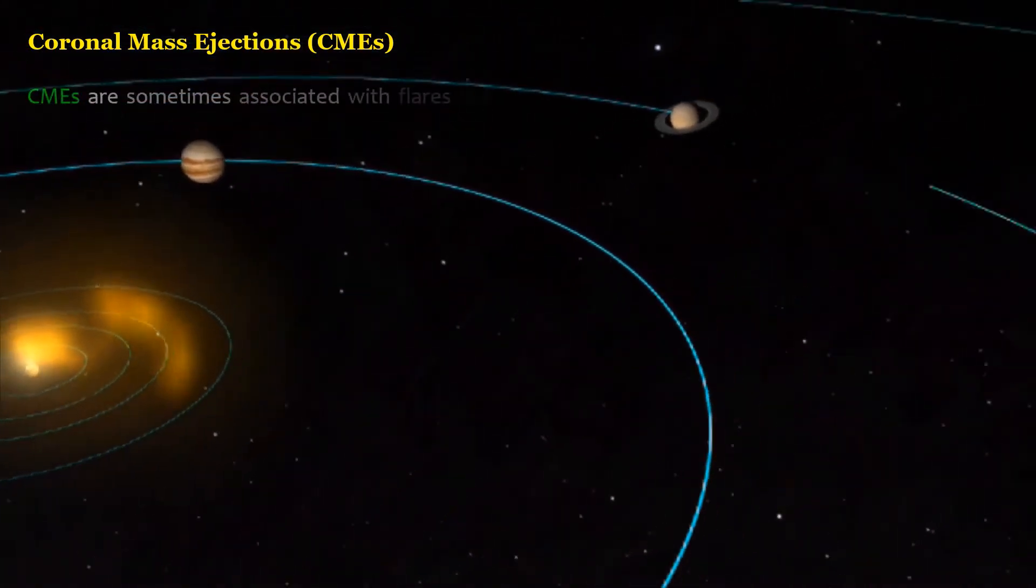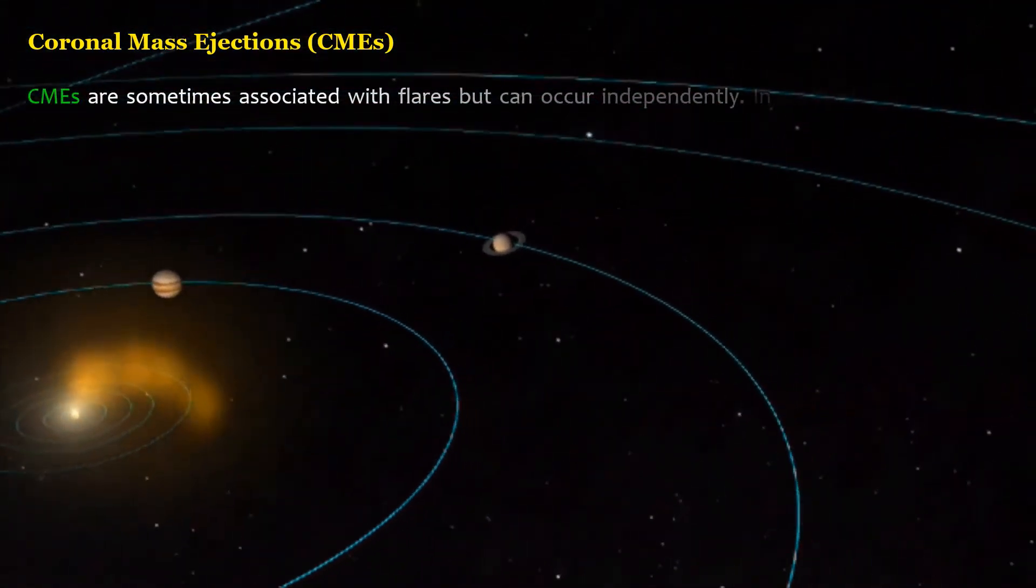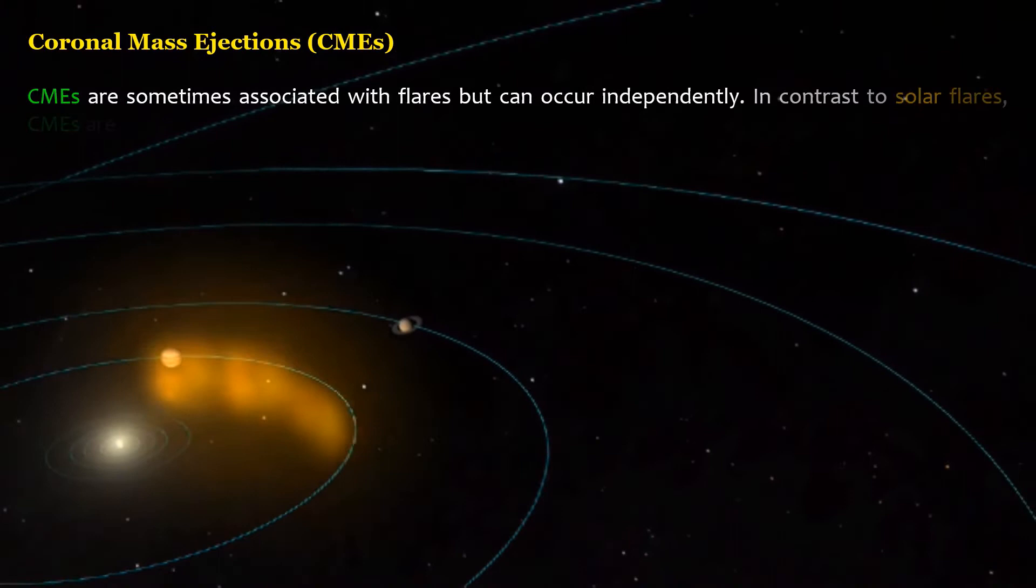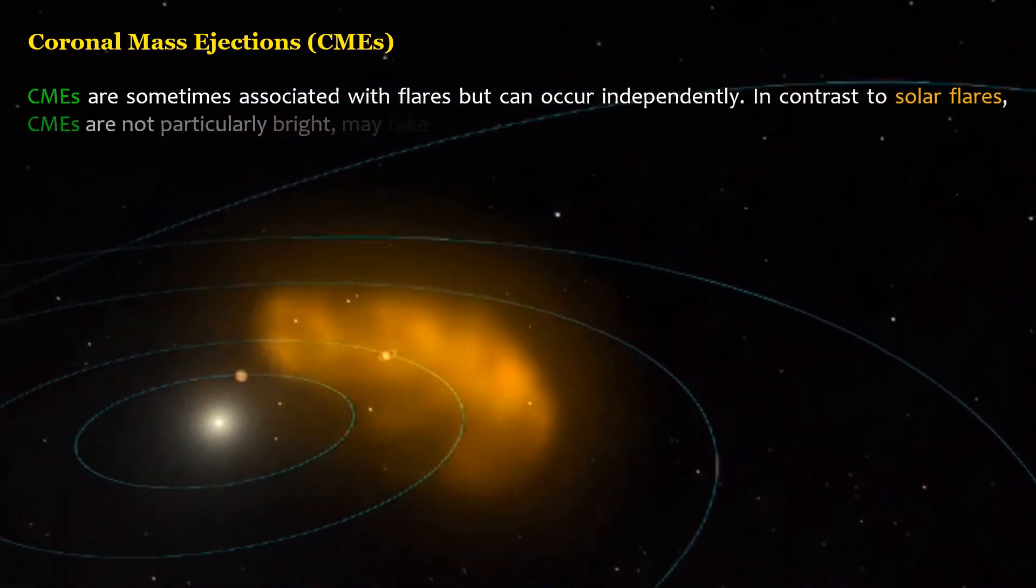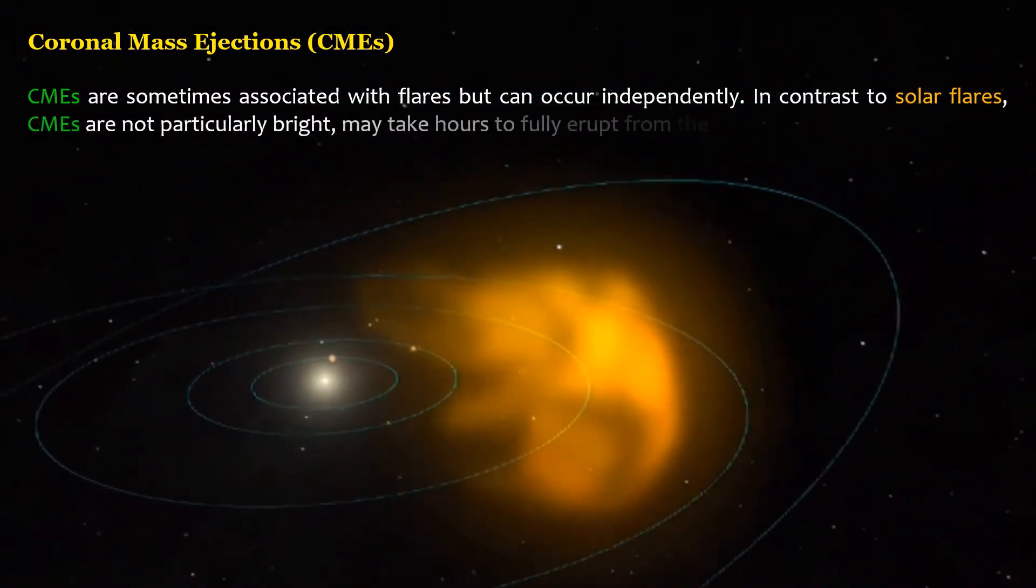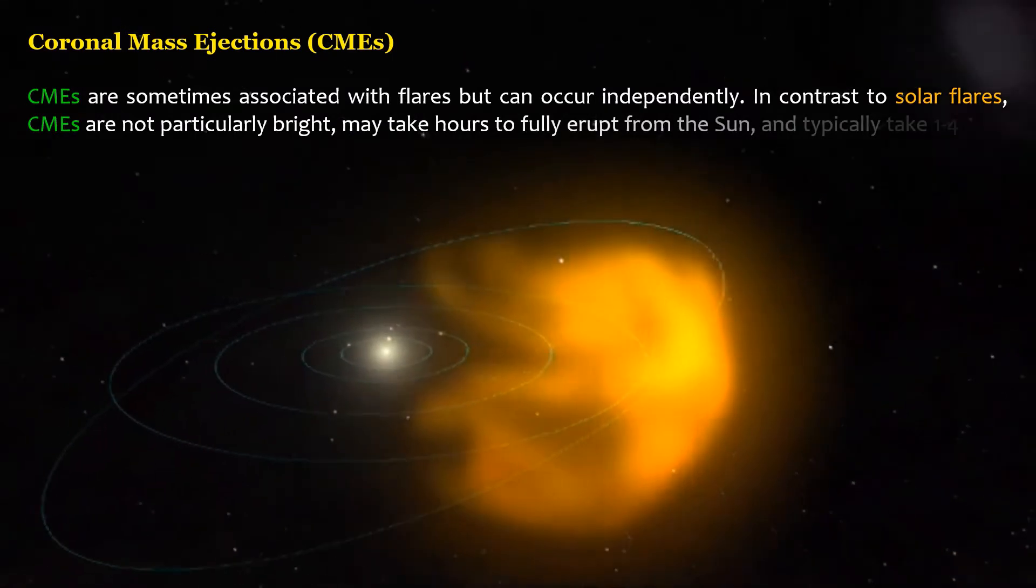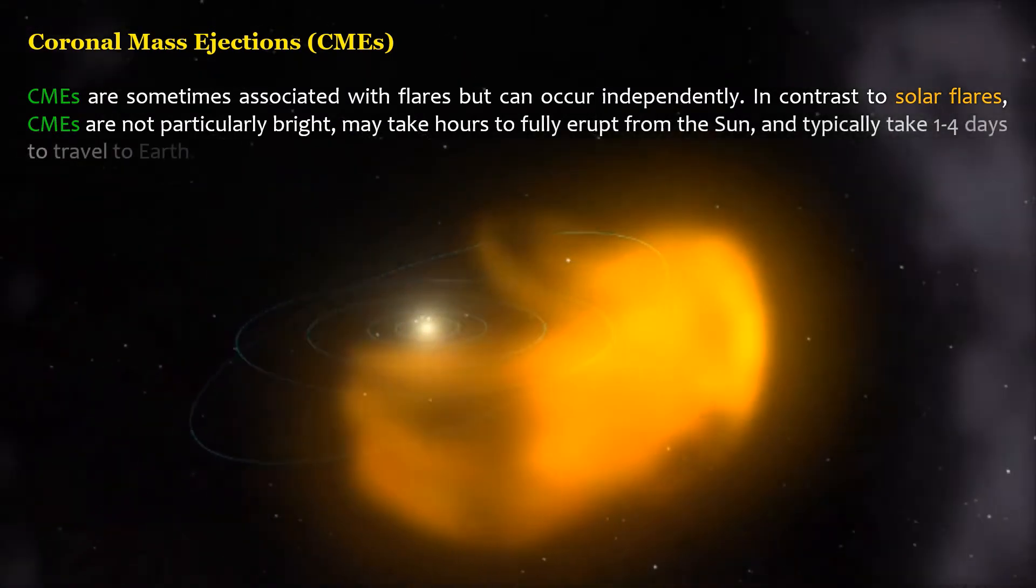CMEs are sometimes associated with flares but can occur independently. In contrast to solar flares, CMEs are not particularly bright, may take hours to fully erupt from the sun, and typically take one to four days to travel to Earth.